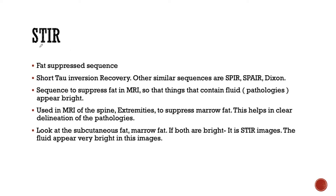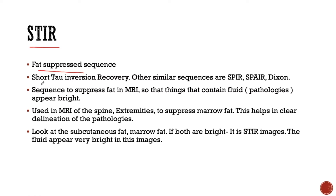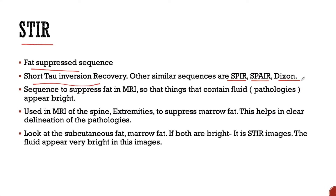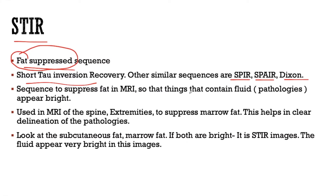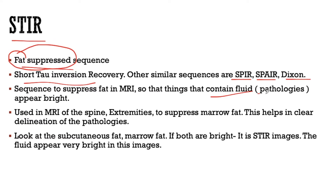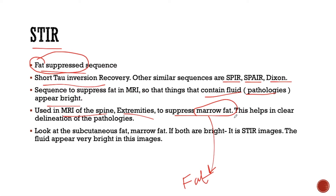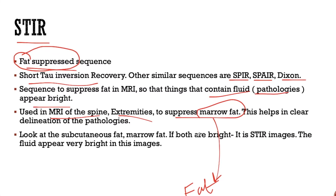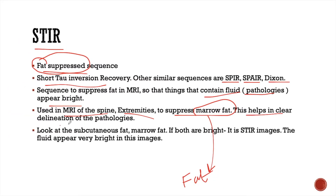Another important sequence is the STIR image — it is a fat suppressed sequence. The full form of STIR is short tau inversion recovery. Other similar sequences are SPIR, SPAIR, and Dixon. This sequence is used to suppress fat so that things that contain fluid, like pathologies, appear bright. This is used in MRI of the spine and extremities to suppress marrow fat. Adult bone marrow contains fat, which may mask pathologies, but when fat is suppressed, the fluid in the pathology appears bright, helping in clear delineation of pathologies in the marrow.